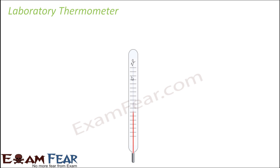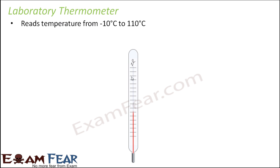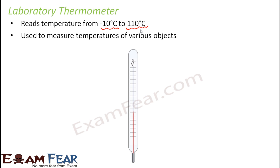The clinical thermometer only has a specific range of measurement — it can only measure temperatures between 35 degrees Celsius and 42 degrees Celsius. So if you try to use it to measure the boiling point of water, the thermometer would break. That is why the laboratory thermometer was developed, which has a much broader scale ranging from minus 10 degrees Celsius to 110 degrees Celsius, allowing a huge range of temperatures to be measured.